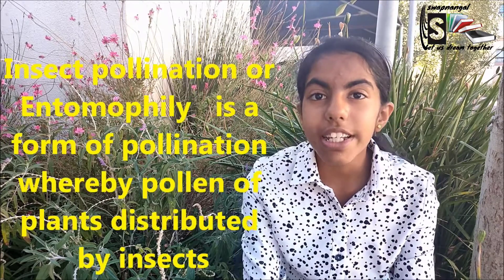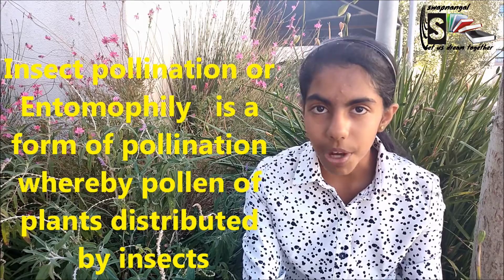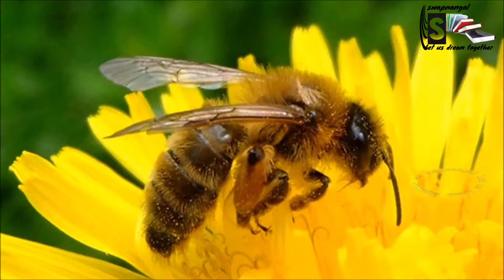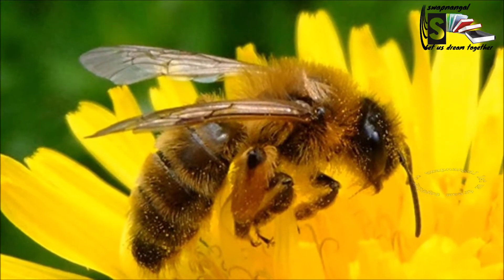The pollen of this plant group frequently brings symptoms of hay fever and allergies to those that are sensitive to pollen. The next type is insect pollination. Entomophily, or insect pollination, is the form of pollination whereby pollen of plants — especially but not only from flowering plants — is distributed by insects. Insect pollinated flowers have five characteristics.